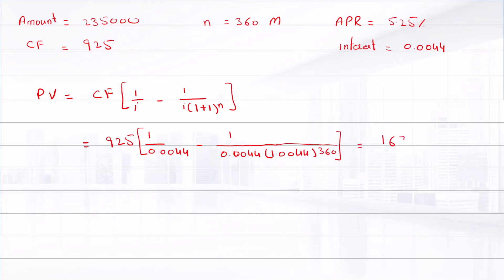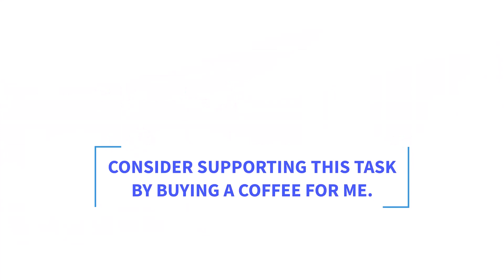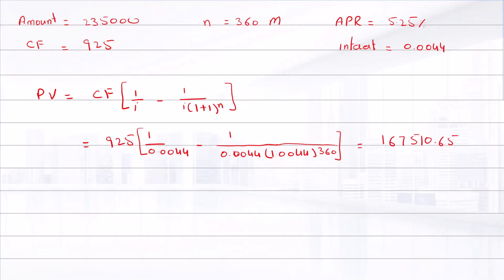The amount of principal you will still owe is the amount borrowed, $235,000, minus the present value of cash flows, $167,510.65, which equals $67,489.35.